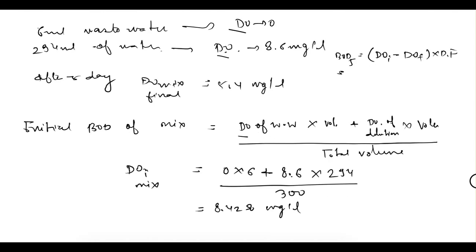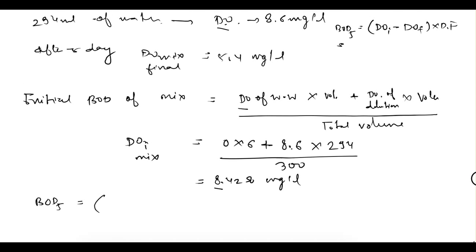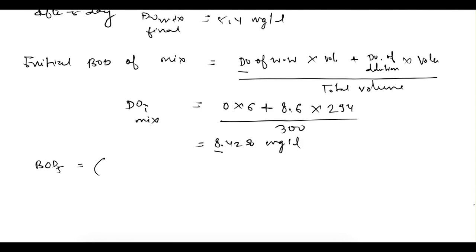Now we can apply the formula to find out BOD5: that is DO initial of mix minus DO final of mix, multiplied by the dilution factor. So DO initial is 8.428 and DO final is 5.4. The dilution factor is total volume divided by waste volume: 294 plus 6 is the diluted volume, and 6 is the undiluted volume, so 300 by 6 equals 50.